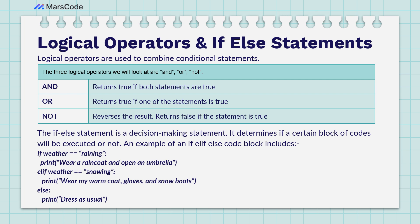ELIF, which means ELSE IF, checks if the weather equals 'snowing'. So if the variable has a different value equal to 'snowing', then it's going to print another message saying: wear my warm coat, gloves, and snow boots. And then ELSE, if it's neither raining nor snowing, it's going to print saying dress as usual.